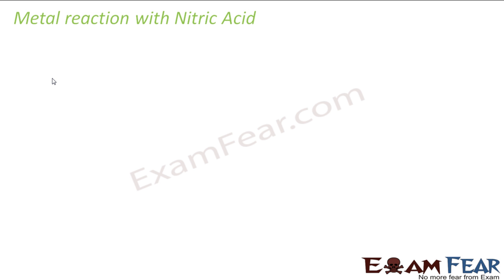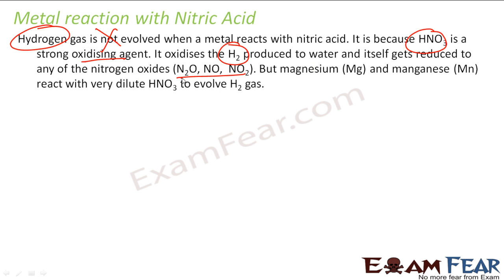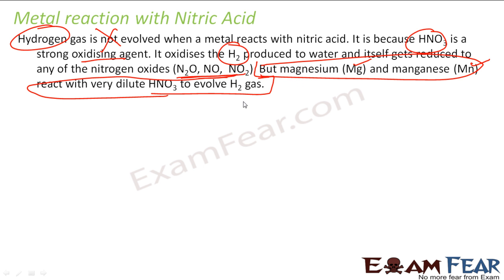Let us react metals with nitric acid — we have already done this with HCl. When you react metals with nitric acid, hydrogen gas is not involved. This is because nitric acid is such a strong oxidizing agent that it oxidizes the hydrogen produced to water. Whatever hydrogen is produced, it converts into water itself, and the nitric acid is itself reduced to nitrogen oxides.